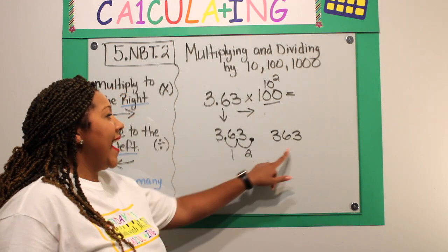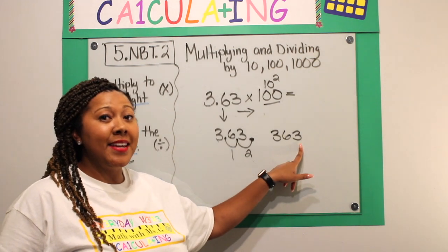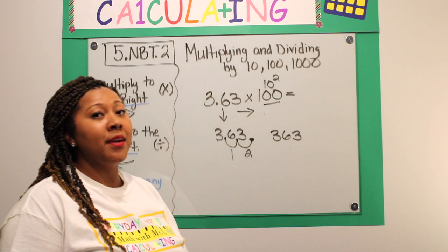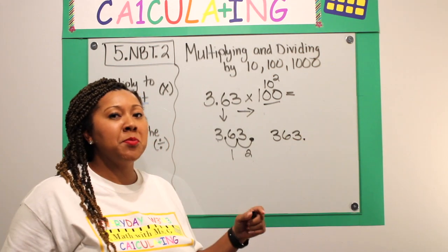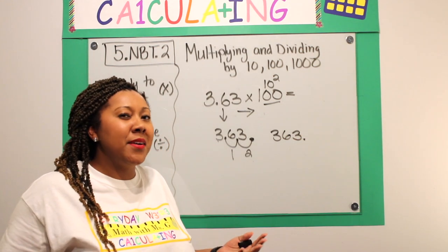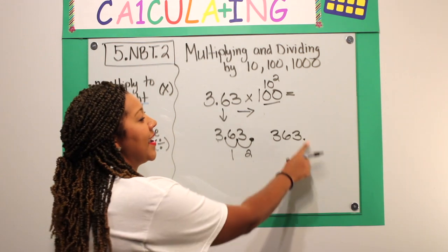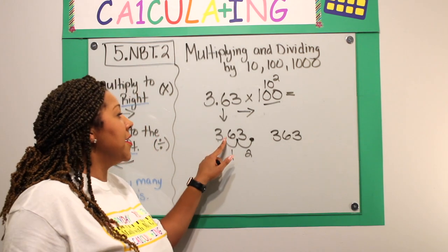Take note that I don't have a decimal in this number anymore because this is a whole number. Usually, there's an imaginary decimal behind the ones place, but because I have a whole number and we typically don't write like that, I don't need that decimal place.